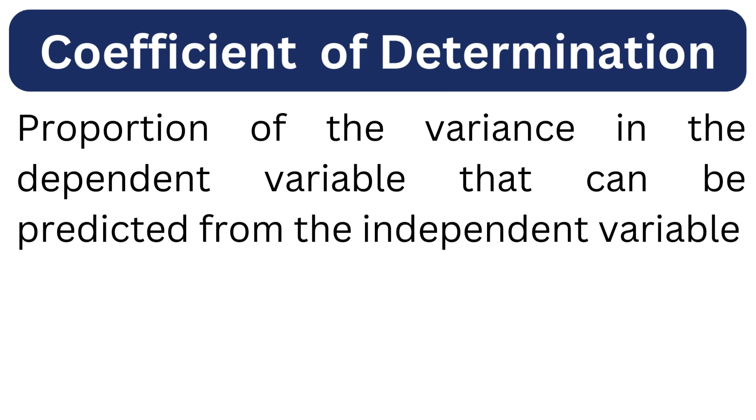Now, there is another related term we should discuss: that is R squared. This statistic gives us the proportion of the variance in the dependent variable that can be predicted from the independent variable. It is also known as the coefficient of determination.